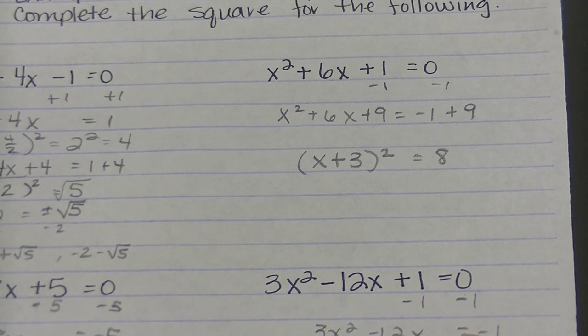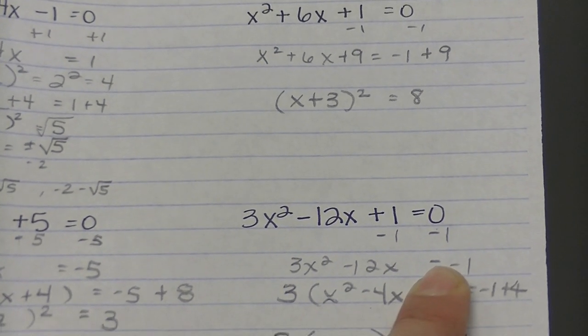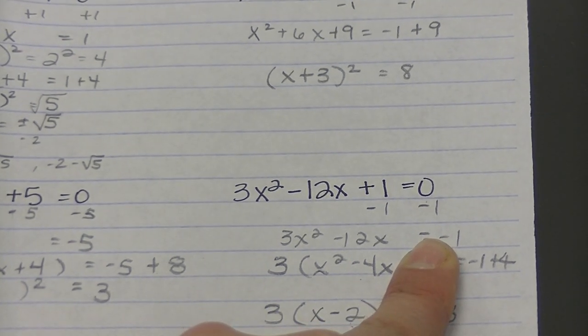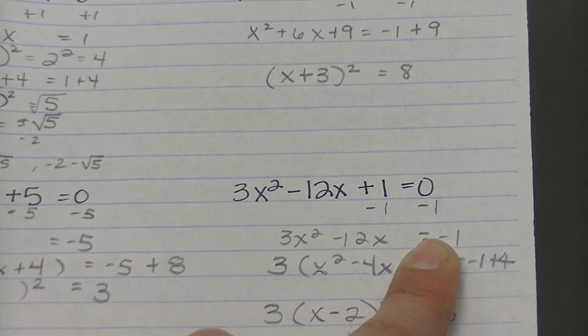Same kind of deal over here. I'm going to subtract the 1 from both sides. Then I'm going to factor out that 3. And I'm left with x squared minus 4x. And then the 3 is on the outside. I'm going to take half of the 4, which is 2, and square it, which is 4.